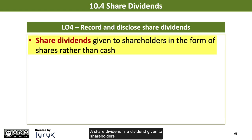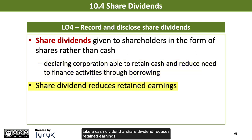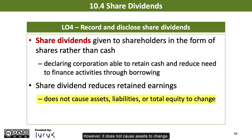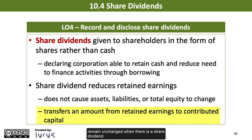A share dividend is a dividend given to shareholders in the form of shares rather than cash. By issuing a share dividend instead of a cash dividend, the declaring corporation can retain cash in the business and reduce the need to finance its activities through borrowing. Like a cash dividend, a share dividend reduces retained earnings; however, it does not cause assets to change. It simply transfers an amount from retained earnings to contributed capital. Total assets, total liabilities, and total equity remain unchanged when there is a share dividend.